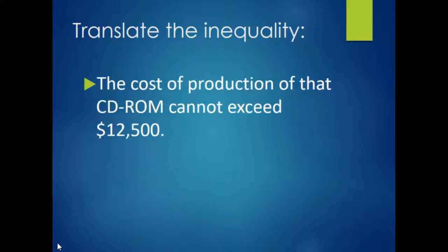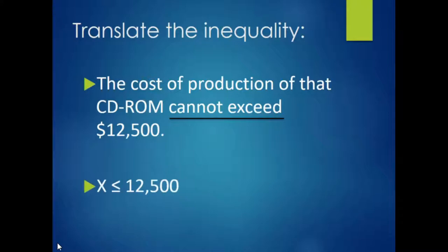The cost of production of that CD-ROM cannot exceed $12,500. 'Cannot exceed' means it can't go over, but can equal. The appropriate inequality is less than or equal to. X, standing for the production cost, is less than or equal to $12,500.